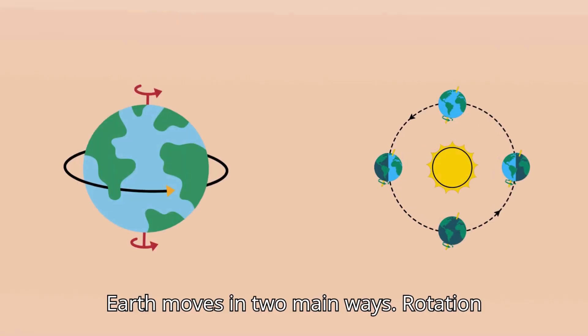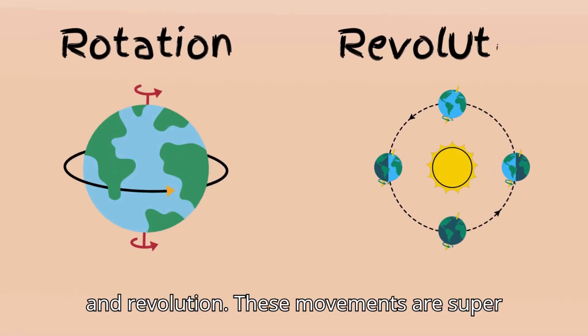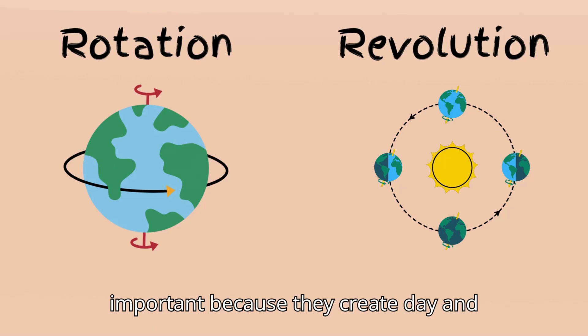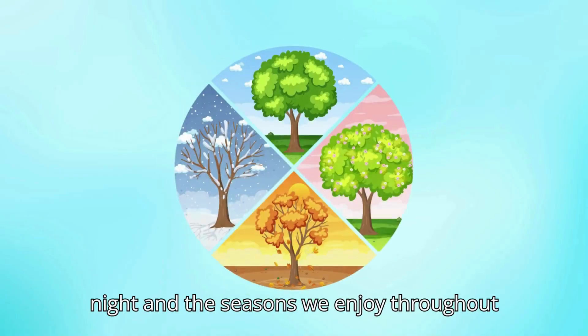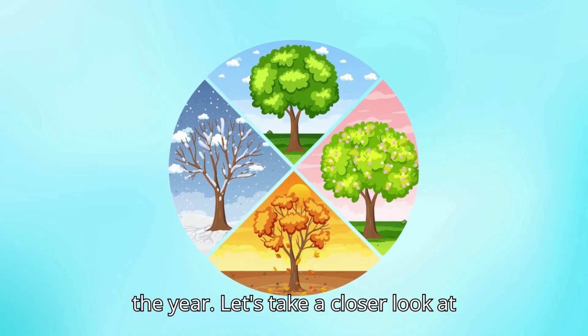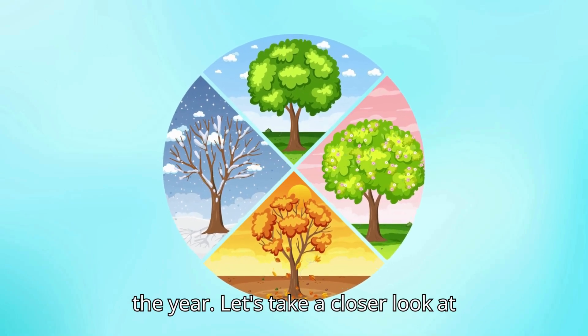Earth moves in two main ways, rotation and revolution. These movements are super important because they create day and night and the seasons we enjoy throughout the year. Let's take a closer look at each one.